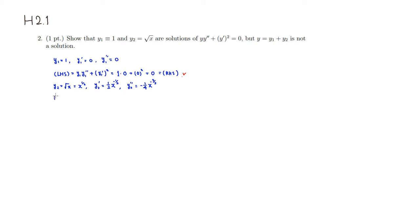Let's start with the left-hand side. The left-hand side is y2 times y2 double prime plus y2 prime squared. Plugging everything in: y2 is x to the 1/2 power, y2 double prime is negative 1/4 x to the negative 3/2, plus y2 prime is 1/2 x to the negative 1/2, and we have to square that.